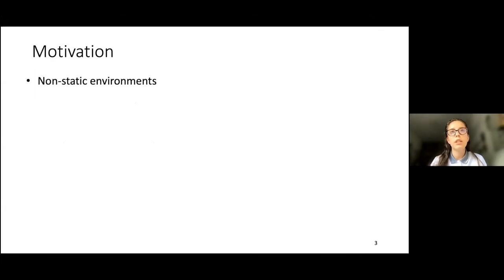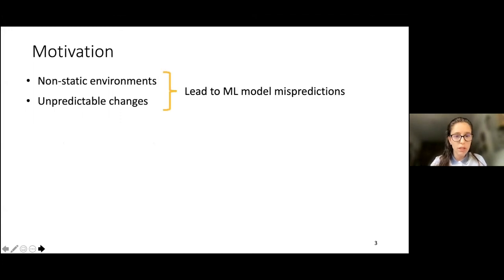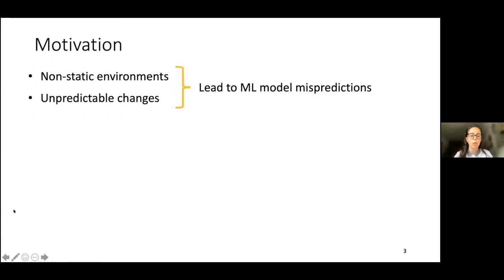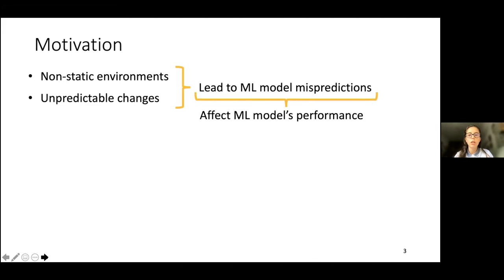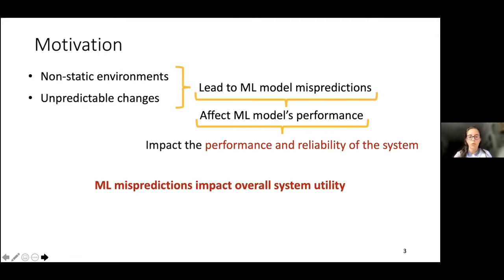Additionally, these types of systems, like self-driving cars, typically operate in non-static environments and are prone to unpredictable changes. These changes can lead the machine learning model to mispredict some inputs, which in turn will affect the model's performance. Because the system depends on the machine learning component, the overall performance and reliability of the system is also affected. As such, machine learning mispredictions have an impact on overall system utility.